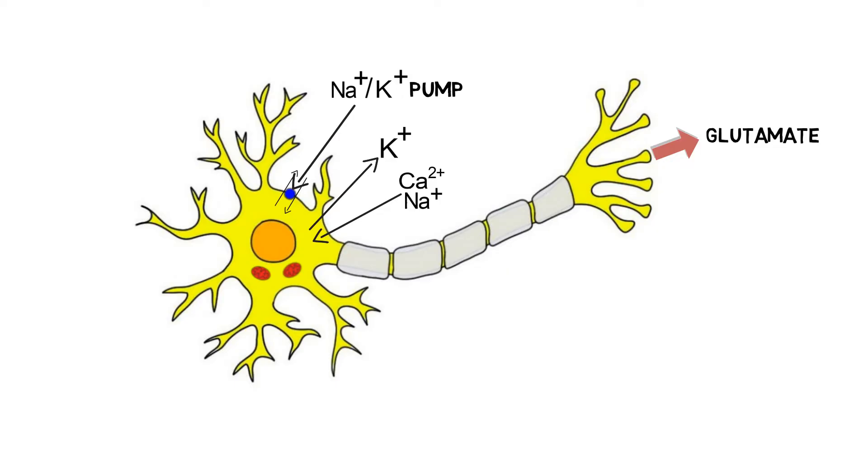Additionally, the increased glutamate activity prompts excess calcium to enter cells. The high calcium levels can disrupt the function of mitochondria, amplifying the energy crisis.